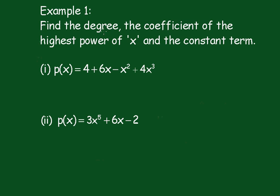Example 1: Find the degree, the coefficient of the highest power of x, and the constant term. In the first case, we look along and find the x with the highest power or highest index, and clearly it's this one here. The degree equals 3.